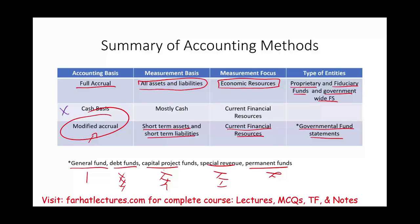To summarize: under full accrual, the measurement focus is economic resources — all assets and all liabilities — used by regular businesses, proprietary funds, fiduciary funds, and government-wide financial statements. Under modified accrual, the measurement focus is current financial resources — short-term assets and short-term liabilities — used by governmental fund statements. Understanding modified accrual is the basis for governmental accounting; it's a method you must be familiar with for both governmental accounting courses and the CPA exam.